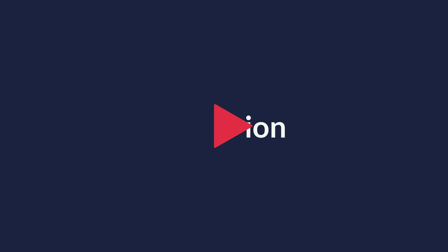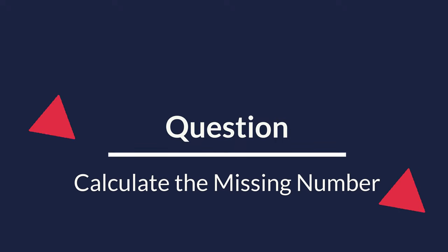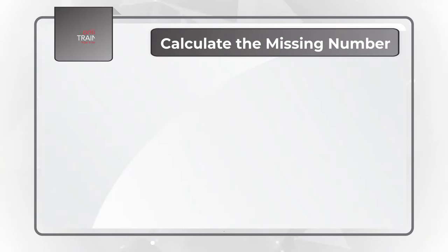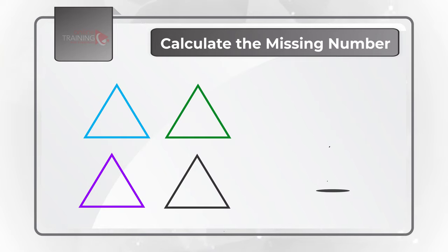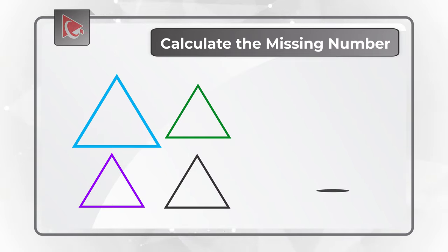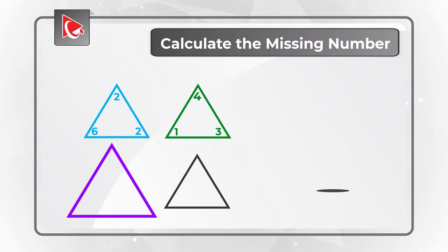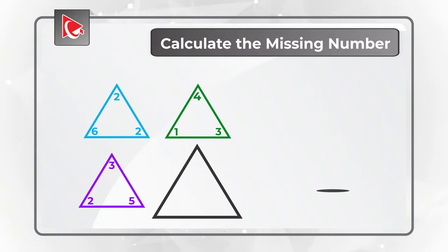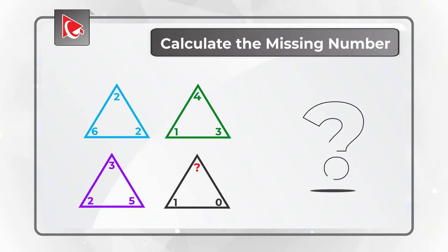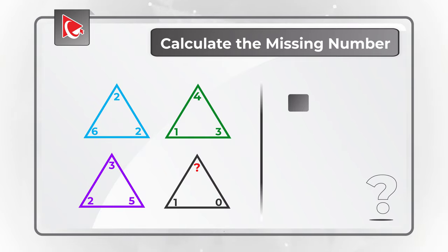Here is the famous four-triangle question you regularly observe on the test. You need to calculate the missing number represented by a question mark. You're presented with four different triangles, each of a different color. The blue triangle has numbers 2, 2, and 6. The green triangle has numbers 4, 3, and 1. The purple triangle has numbers 3, 5, and 2. The black triangle has numbers 0, 1, and a missing number. Choices are A: 0, B: 1, C: 2, D: 3.